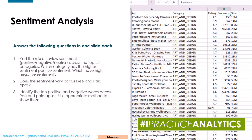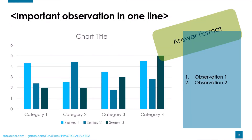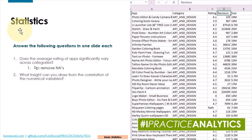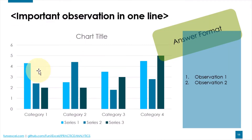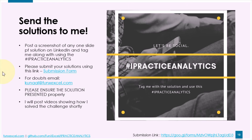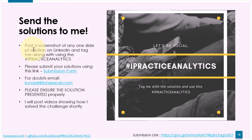I'm going to upload these challenges on a GitHub link where you can download it, or you can download it off of Kaggle. Then what you need to do is use these challenges — I've indicated whether you have to do one slide or each one slide — represent them in a neat format like this, write the most important observation, write any other observations that you may have, and then finally submit the solution in the Google Form that I have given.